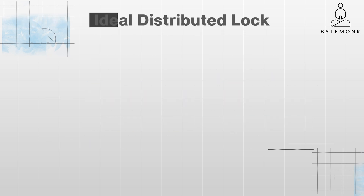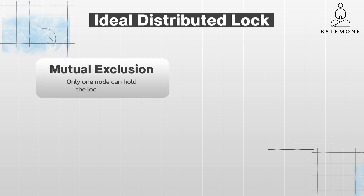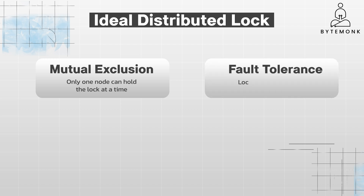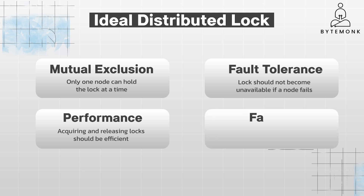An ideal distributed lock should guarantee that only one node can hold the lock at a time, eliminating race conditions and ensuring that operations are performed atomically. It should guarantee the lock does not become unavailable if a node fails. The acquiring and releasing of locks should be efficient and not introduce significant overhead. The nodes should have a fair chance of acquiring locks without starvation.